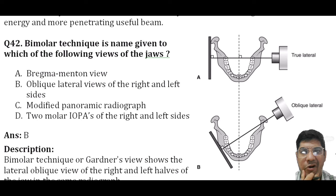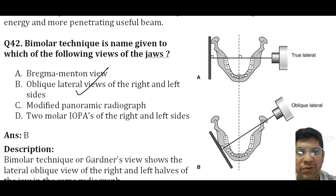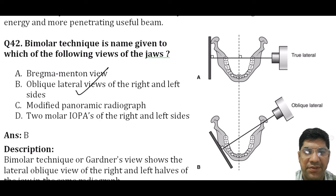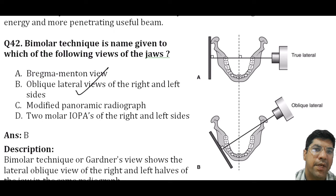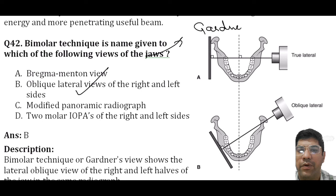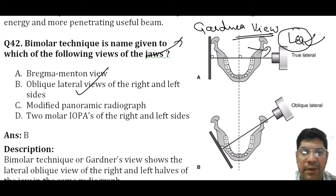The bimolar technique is used for the lateral oblique view of the jaw. Bimolar is the term used for a radiographic projection showing an oblique lateral view of the right and left sides of the jaw on different halves of the same radiograph. This technique captures both sides of the jaw in a single radiograph while protecting one side from excessive radiation using a lead shield. It is also known as the Kirdner view.